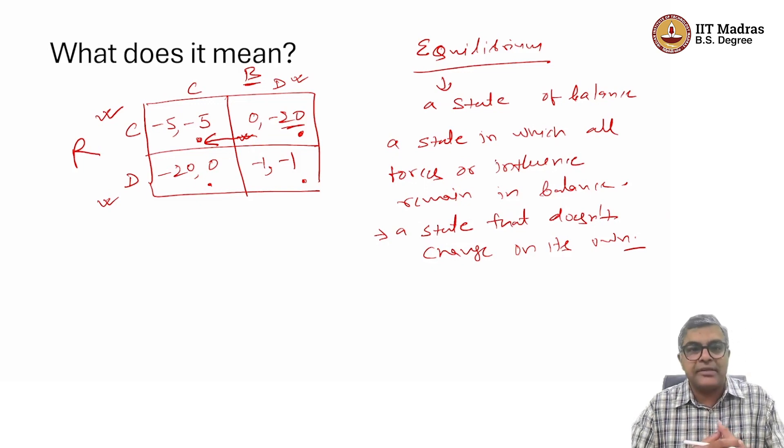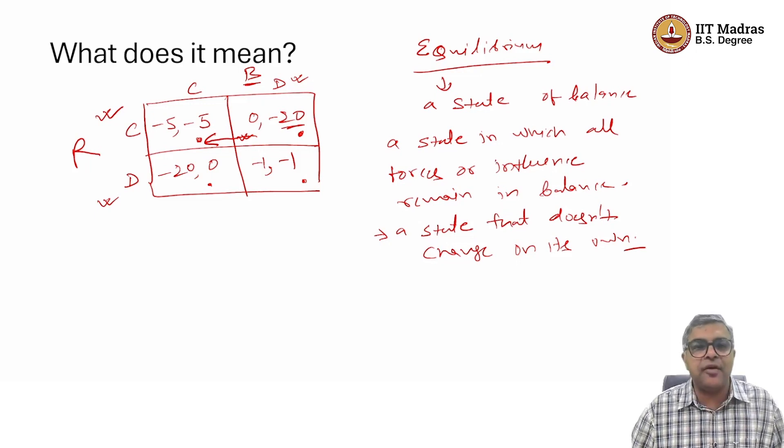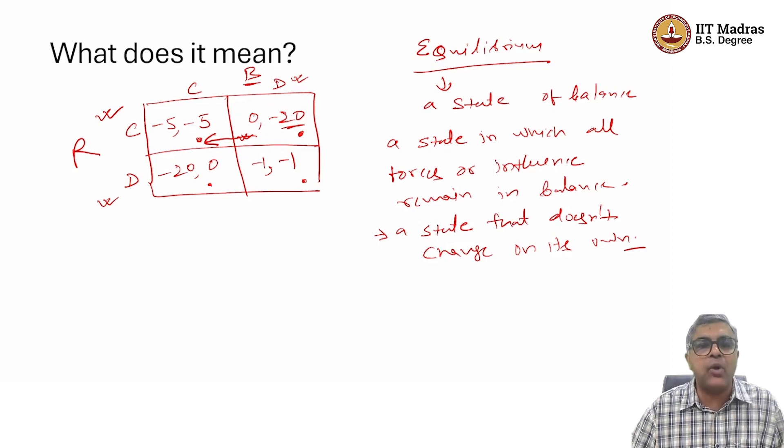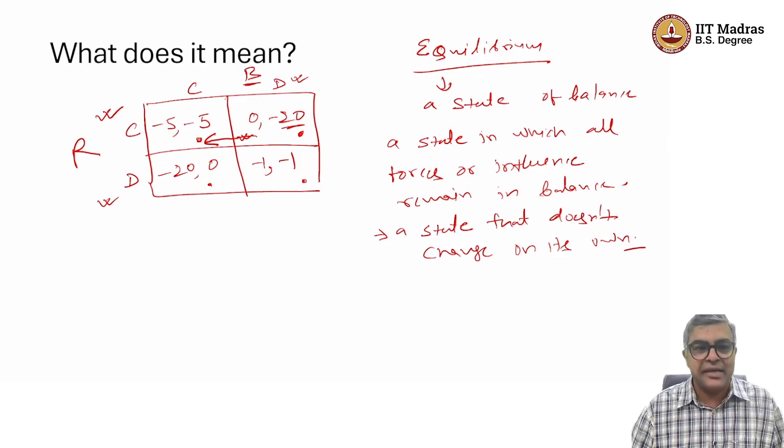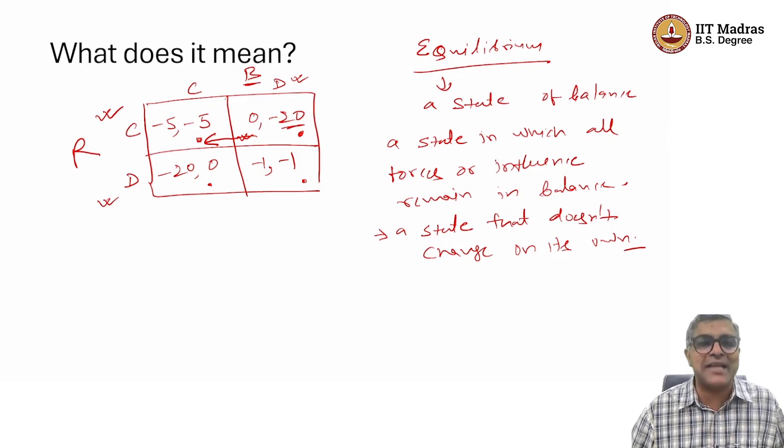And that is why what we mean by an equilibrium here, a setting, a state that does not change on its own. Of course, this state is made of behavior of Ranga and Billa. So, what do we mean by here? A state in which neither Ranga wants to change his action nor Billa wants to change his action, given what others are doing. Because Ranga and Billa, as I keep on saying, they do not have control over others' action, others' behavior. So, that kind of equilibrium we are looking for.